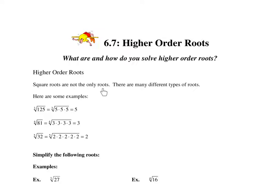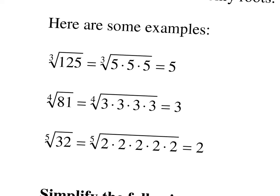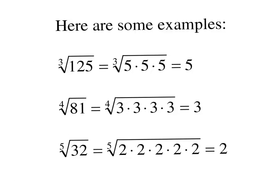Square roots are not the only kind of roots. We've done a lot with square roots in this chapter, but there are other kinds of roots. If you look at these examples up close, you'll notice that there are little numbers in the edges of the square root symbol. Those little numbers are called an index. The index is telling you that we are no longer looking for two factors that multiply together to make the radicand, but now we are looking for three or four or five.